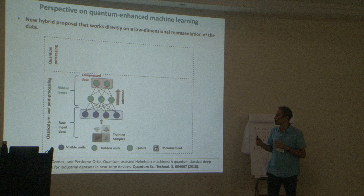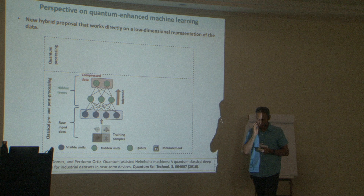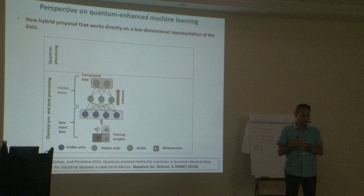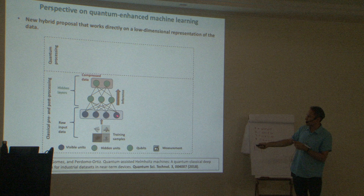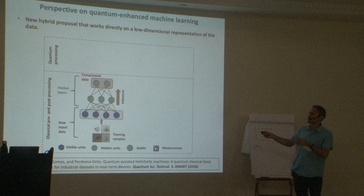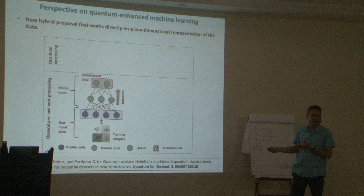Basically the idea is — and this is an observation I had — in deep learning, usually what you do is you have a deep network like this one that goes for many layers. As I told you, for Google's face recognition, it's 150,000 layers, and tons of variables, billions of neurons, so it's crazy.